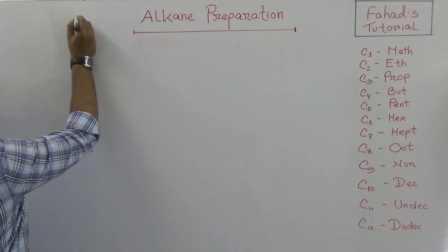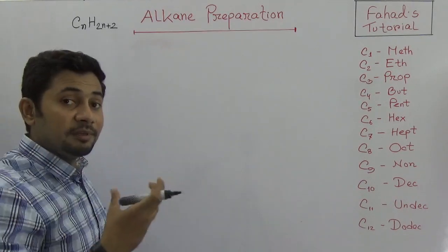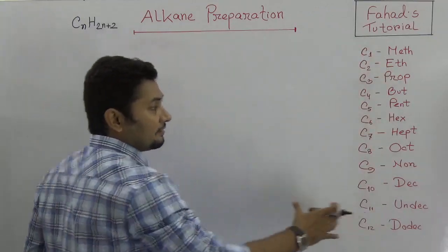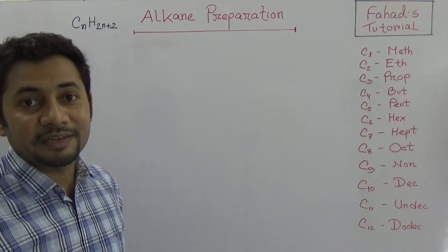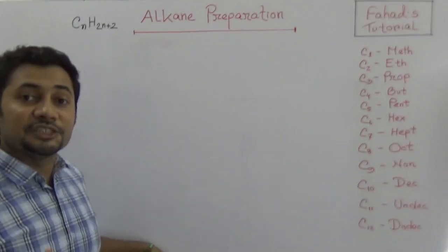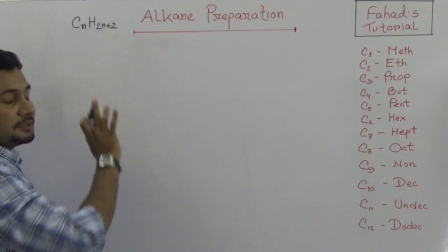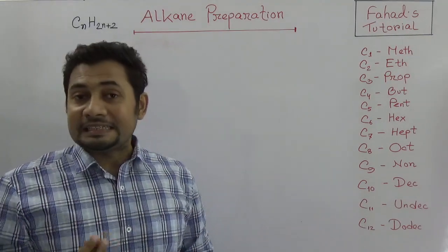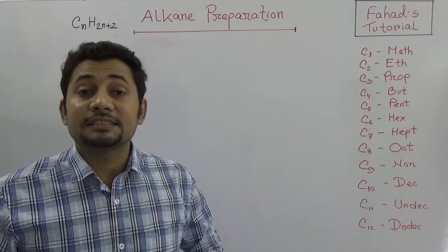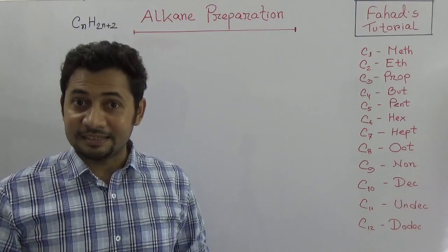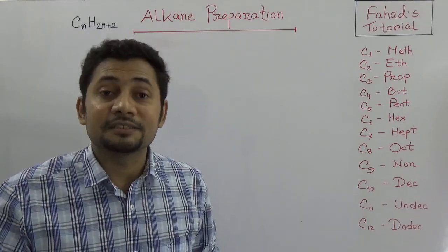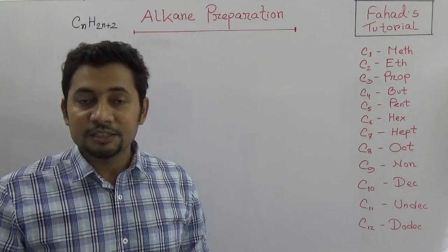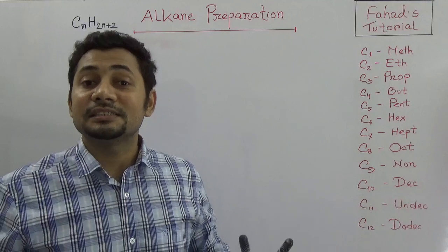The general formula of alkane is CnH2n+2. From the naming of organic compounds, we use Greek alphabetical order: meth, eth, prop, but, pent, and so on, based on the number of carbons. If there are n carbons, hydrogen would be 2n+2. Alkane is a saturated aliphatic hydrocarbon, consisting of hydrogen and carbon. Saturated means it has only single bonds, i.e., sigma bonds — no double or triple bonds.